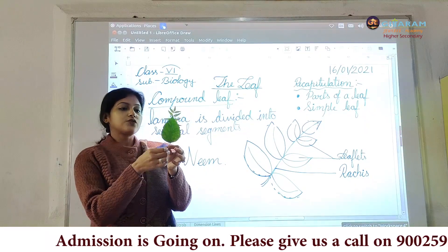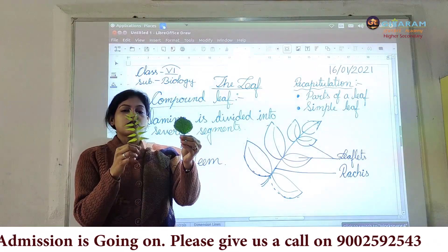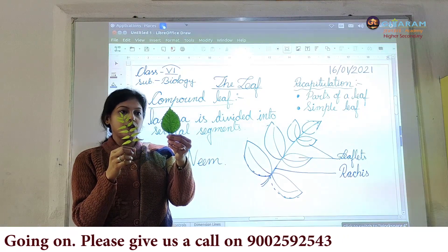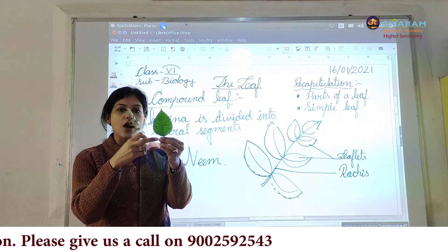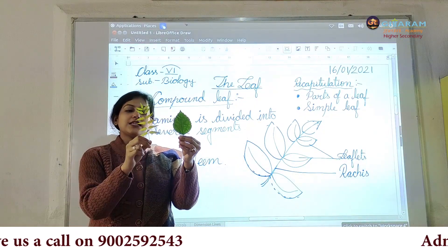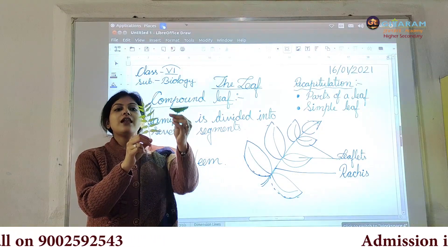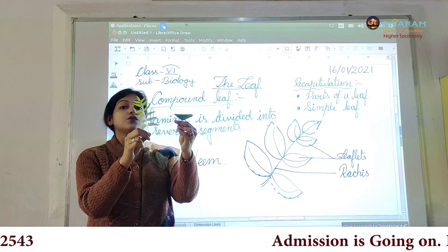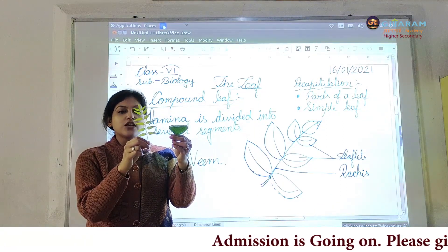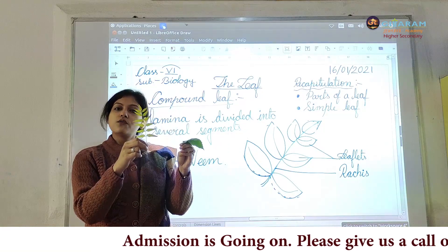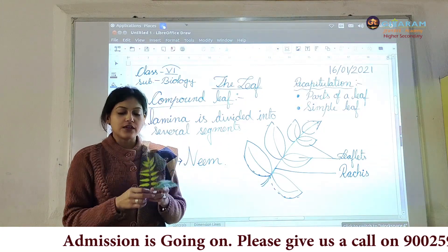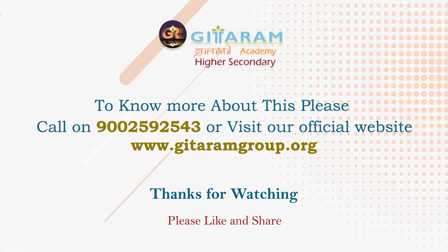Now I am showing you, just to remind you, the structure of the simple leaf. This is simple leaf — the lamina is not divided into segments. But in the case of compound leaf, the whole lamina is divided into segments due to the presence of different incisions, and as a result these leaflets are formed. Thank you everyone.